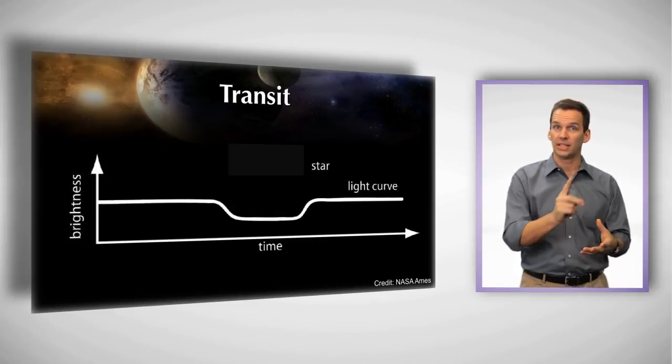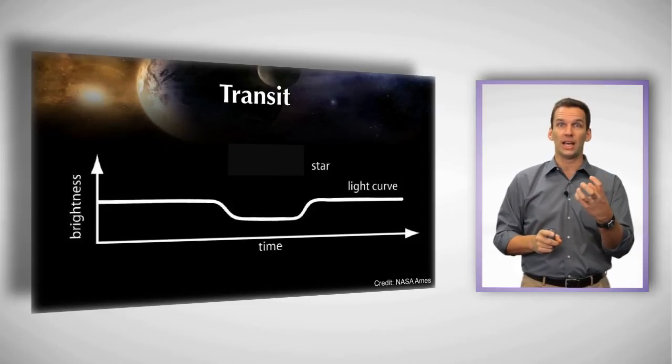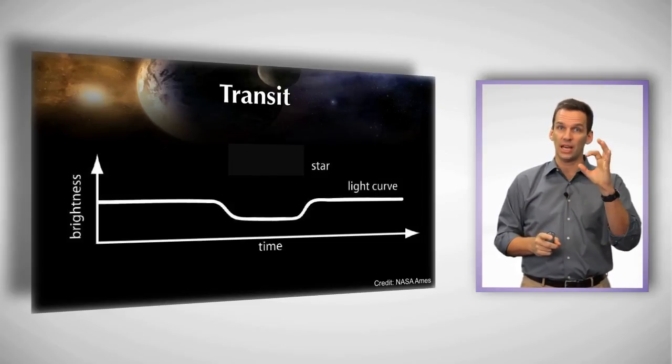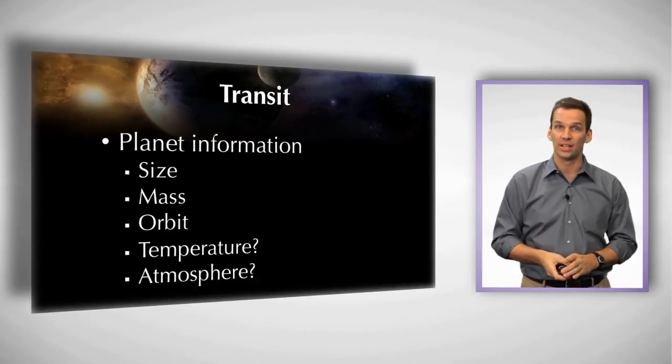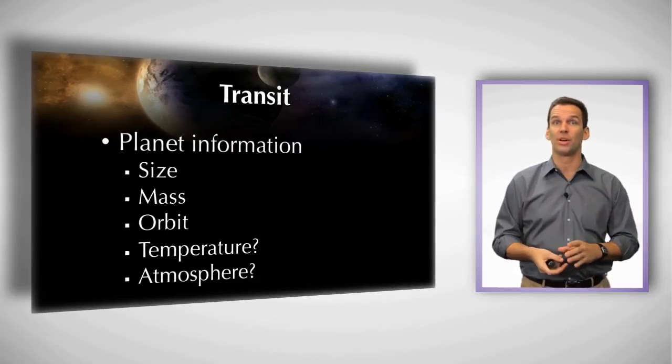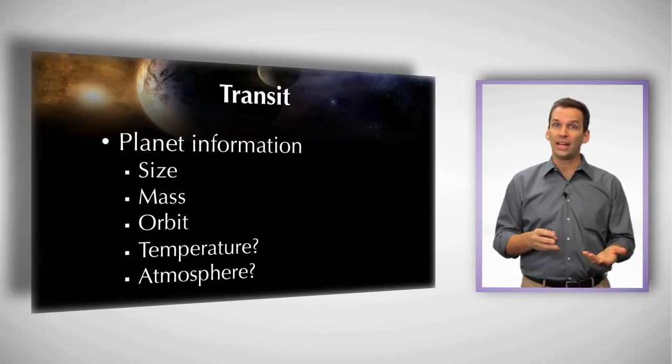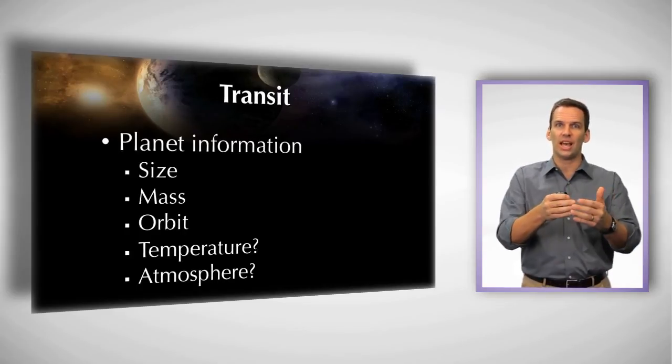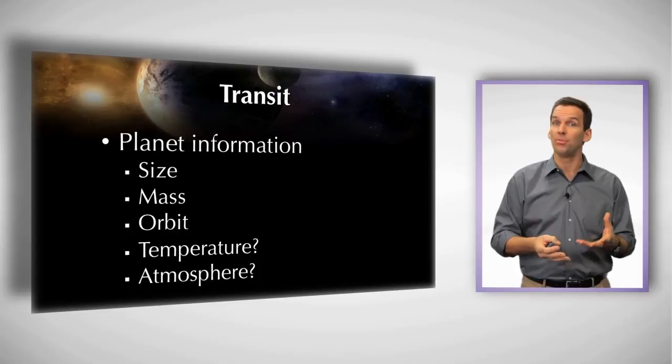And what's neat about this technique is that as the planet transits in front of the star, it dims the light, and by how much it's dimmed, you can tell the actual dimension of the planet. So you get the physical size. And if you're able to couple this with some other technique, you can get the mass. You also get the orbit. And because you're actually seeing as the planet's moving into and out of the transit, it's possible to get information about the atmosphere and maybe even the temperature.